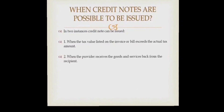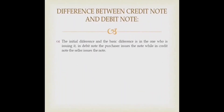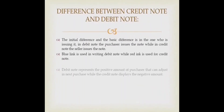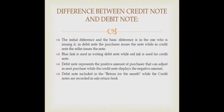The differences between a credit note and a debit note are as follows. In a debit note, the purchaser issues it, while in a credit note, the seller issues it. Blue ink is used in writing a debit note while red ink is used for a credit note. A debit note represents a positive amount for the purchaser that can be adjusted in the next purchase, while the credit note displays a negative amount. A debit note is included in the purchase return book for the month, while credit notes are recorded in the sales return book.